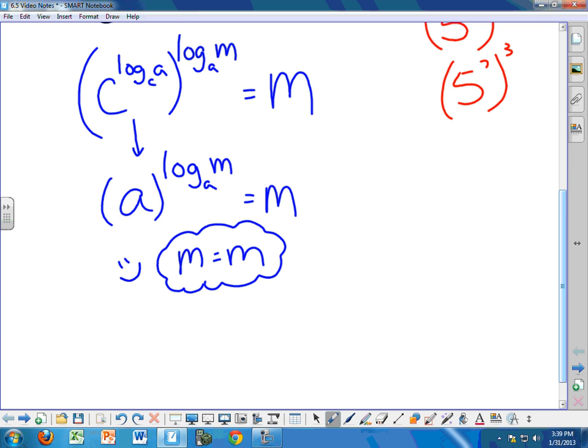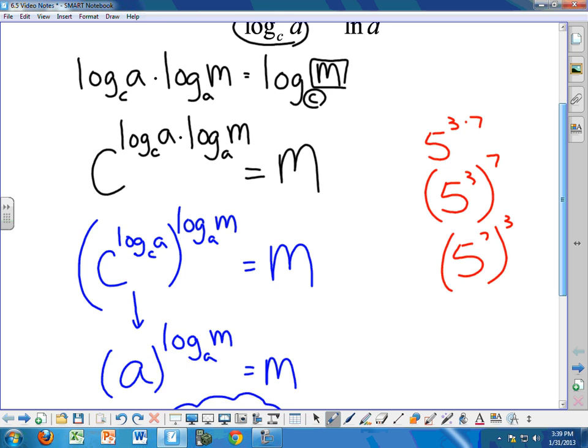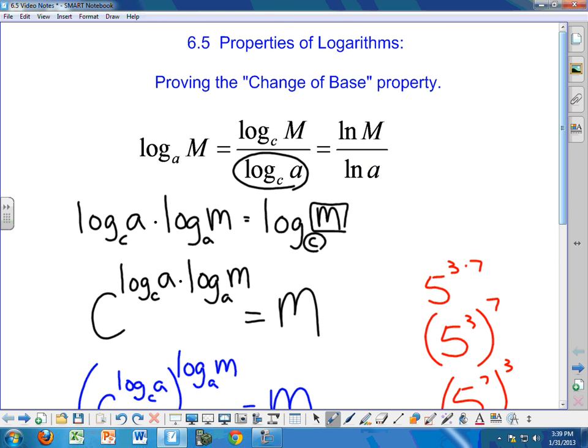Well, what does it prove? It proves that M is M, so therefore the previous step must be equal, and therefore the previous step must be equal, and all those previous steps must be equal, and therefore, this is correct.